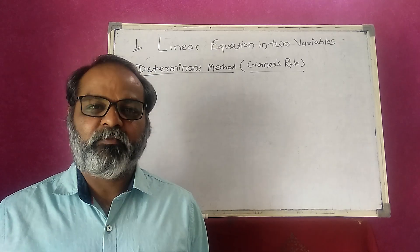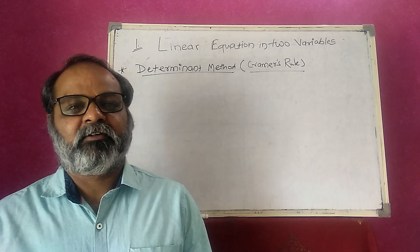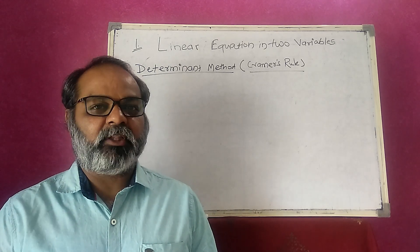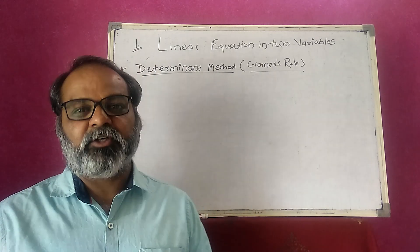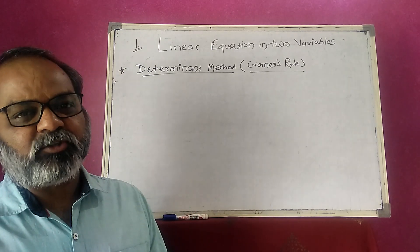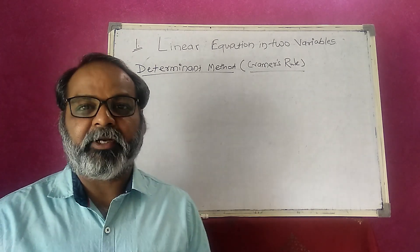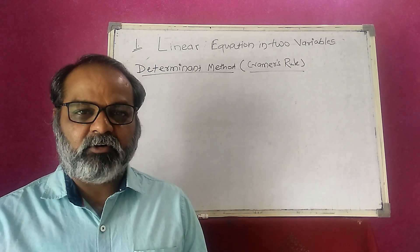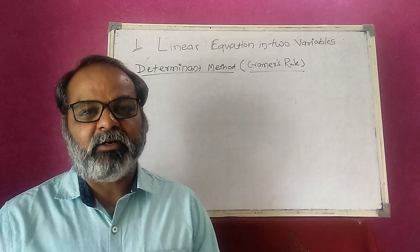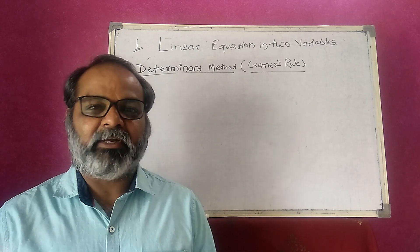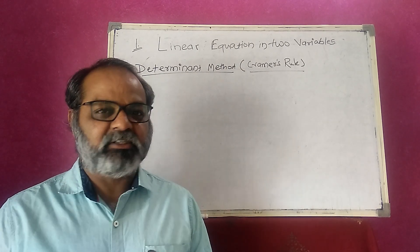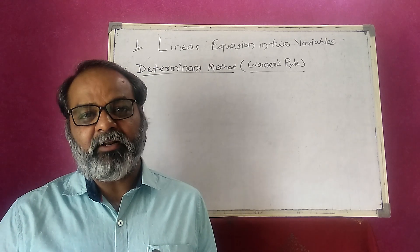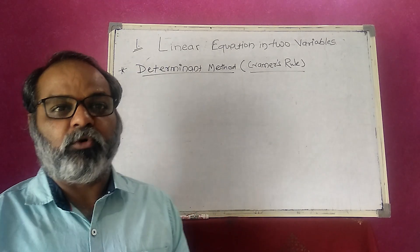Hello friends and welcome to the class of mathematics. Today we are going to deal with another new method to solve a linear equation in two variables. That method is called the determinant method, discovered by Gabriel Cramer, who was a Swiss mathematician. So that method is also called Cramer's Rule.